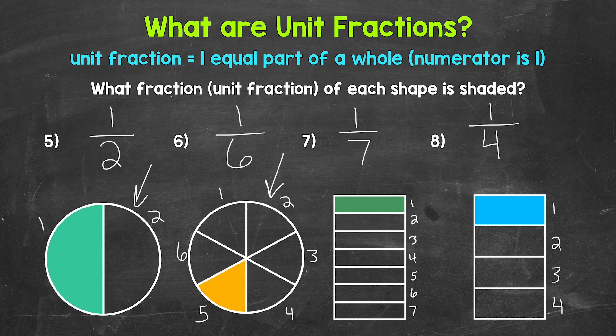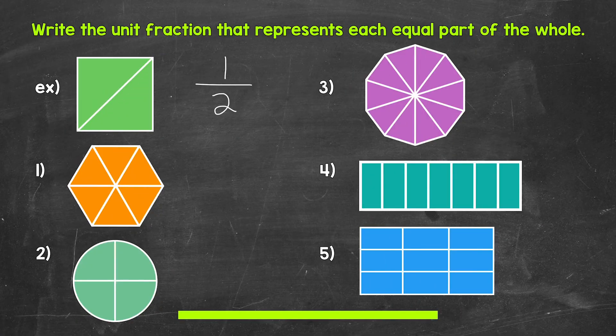Now that we've gone through some examples together, it's time for you to try some practice problems on your own. Have paper and a pencil ready. Write the unit fraction that represents each equal part of the whole. For example, that green square — each equal part is one-half of the whole, so our unit fraction that represents each equal part is one-half. I'll give you two minutes and then we will go over the answers. Go ahead and start.